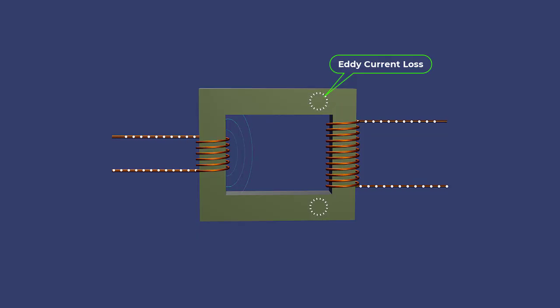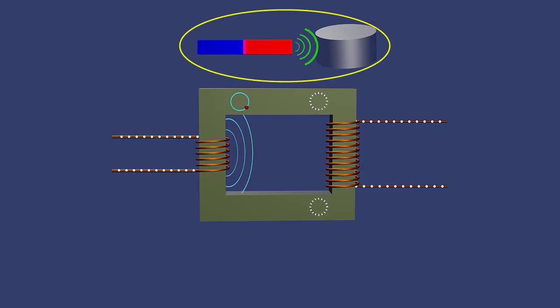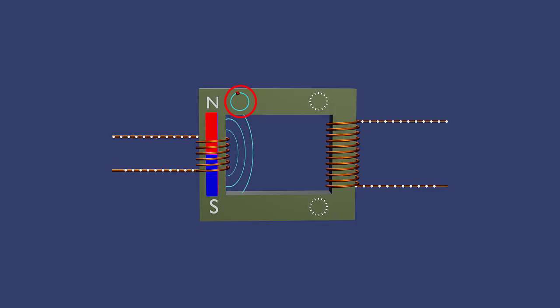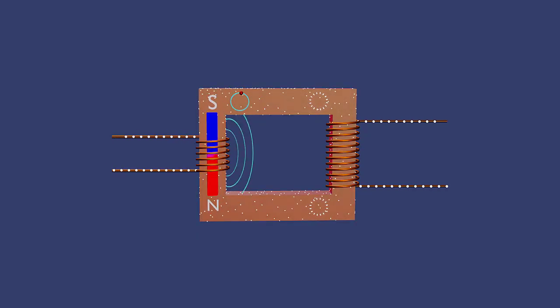Eddy current loss occurs due to circulating current loops in the conductor. When a conductor is exposed to a varying magnetic field, circulating current loops are induced in the conductor, called eddy current. Eddy current produces heat in the core of a transformer.